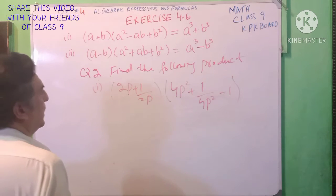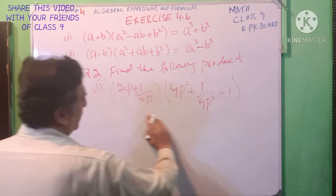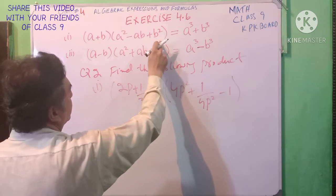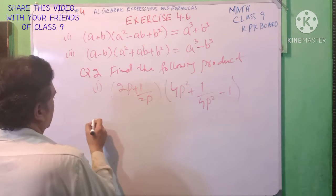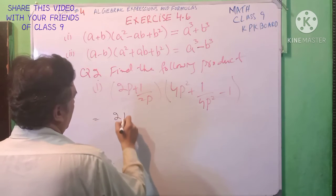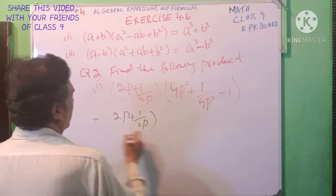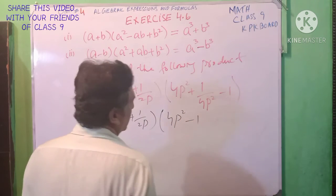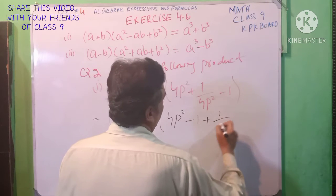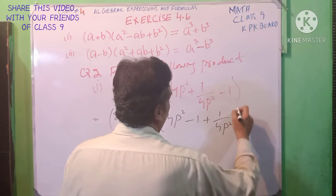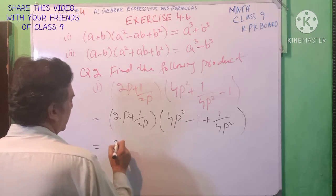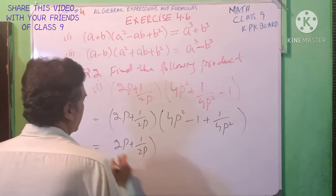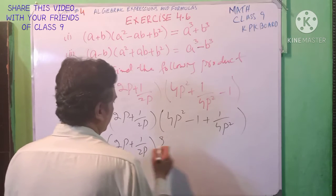Question 2, Part 1. اسے پہلے ہم نے a plus b, a square minus ab plus b square فارمولہ میں convert کرنا ہے۔ a plus b: 4p square — اس 1 کو آپ بیچ میں لکھیں — plus 1 by 4p square. اب ہم اسے فارمولہ میں convert کرتے ہیں۔ یہ a ہے اور یہ b ہے: a plus b, a square.